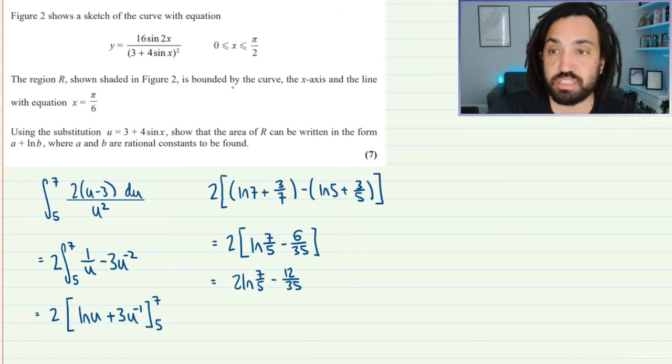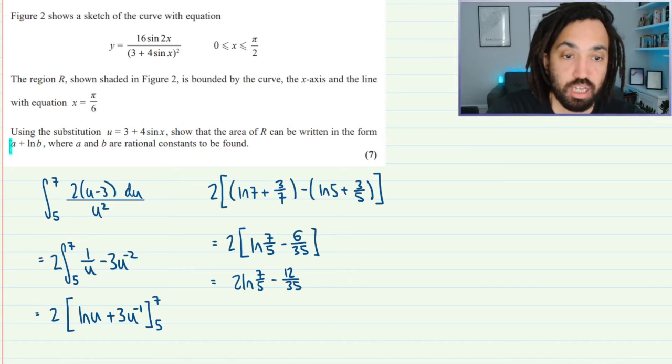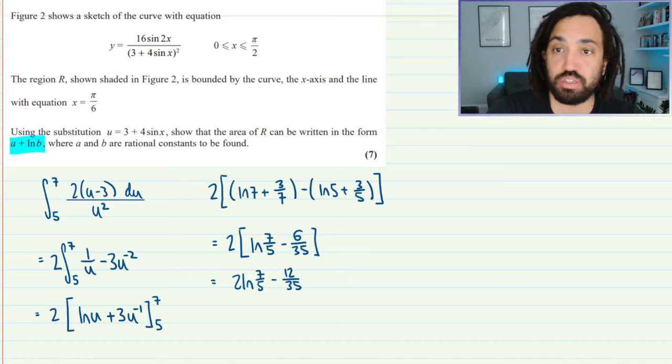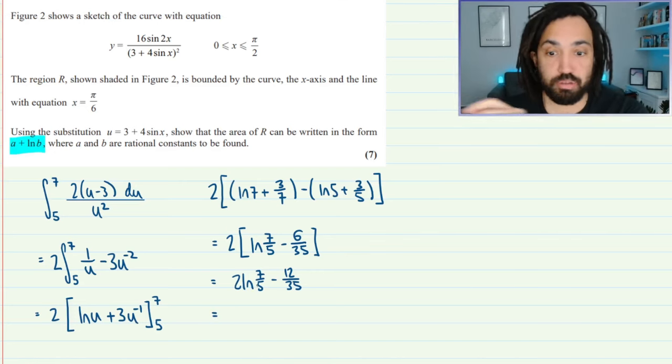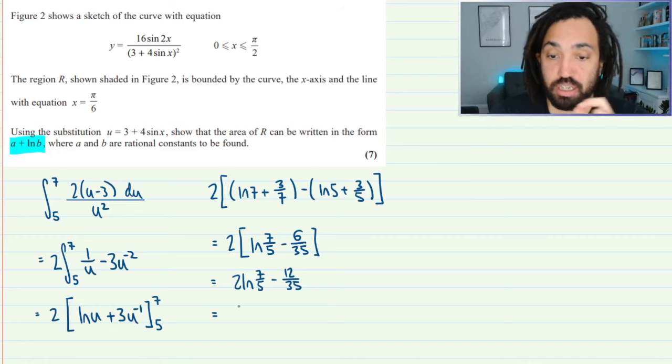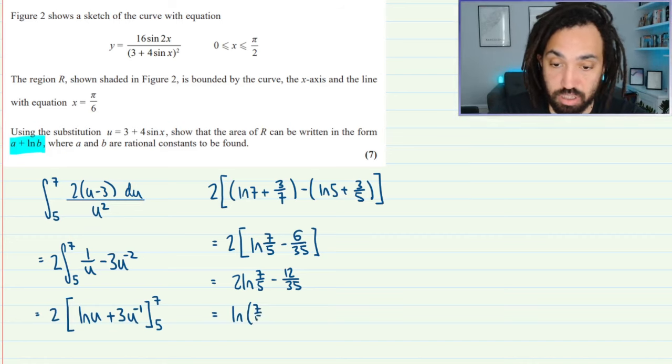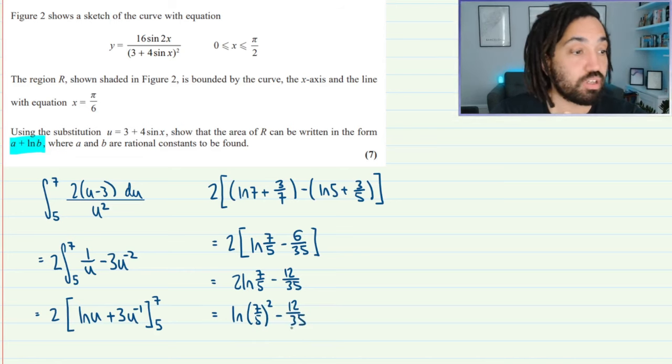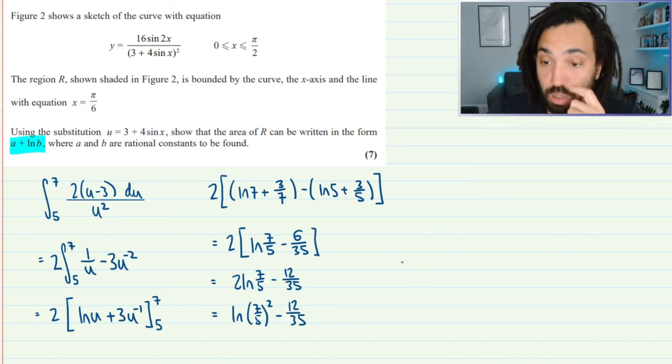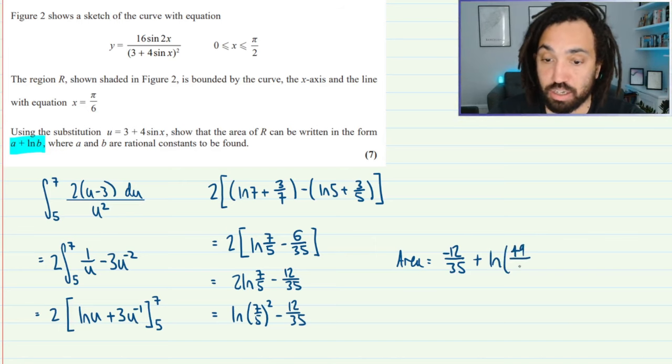It does ask me specifically to have it in this form so I need to make sure that the ln is, I need to bring the 2 up to become the power so using log rules I can bring this up to become ln 7 over 5 squared minus 12 over 35 so my final answer the area will be equal to minus 12 over 35 plus ln so squaring that is going to give me 49 over 25.